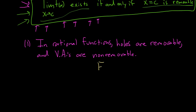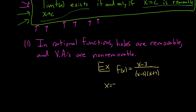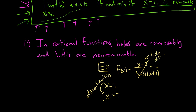Let's do a quick example. If f(x) = (x−3) / ((x−3)(x+7)), this rational function has two discontinuities: x equals 3 and x equals negative 7, because each makes the denominator 0. Notice you can cancel the (x−3) factor, which creates a hole at x equals 3. Whenever you have this cancellation, you get a hole at whatever makes that factor 0. Holes are always removable.